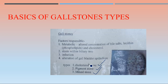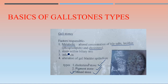Pure cholesterol stones and pigment stones - the latter commonly seen in hemolytic anemia - are the other two types. The mixed type is the commonest. Various predisposing factors for gallstone formation include metabolic alterations in concentration of bile salts, lecithin (phospholipids), and cholesterol; cholestasis within the biliary tree; infection in the biliary tree; and alteration of the gallbladder epithelium.